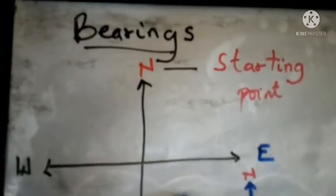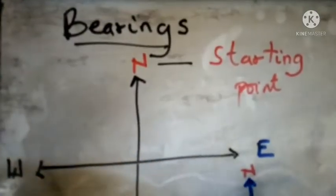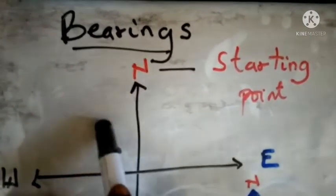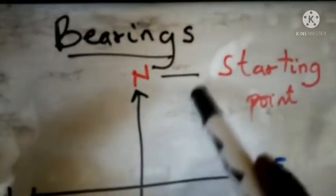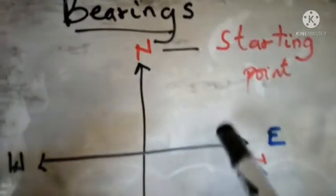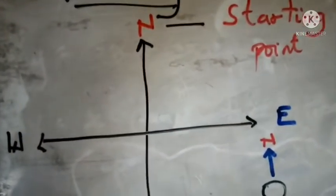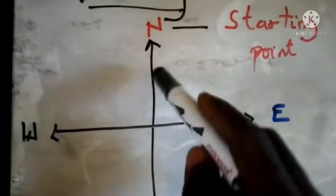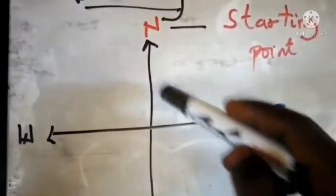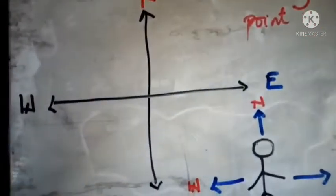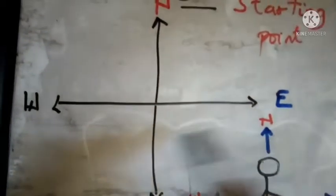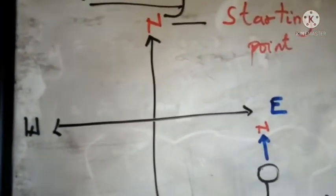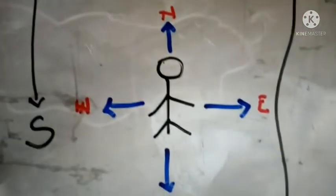The idea of a bearing in mathematics is mostly about a direction — moving from somewhere to your destination. That is the simple meaning of a bearing. If you want to know about direction, let's say you are standing somewhere: where you are facing is your north direction, the back of you is south, and left or right will be west or east.